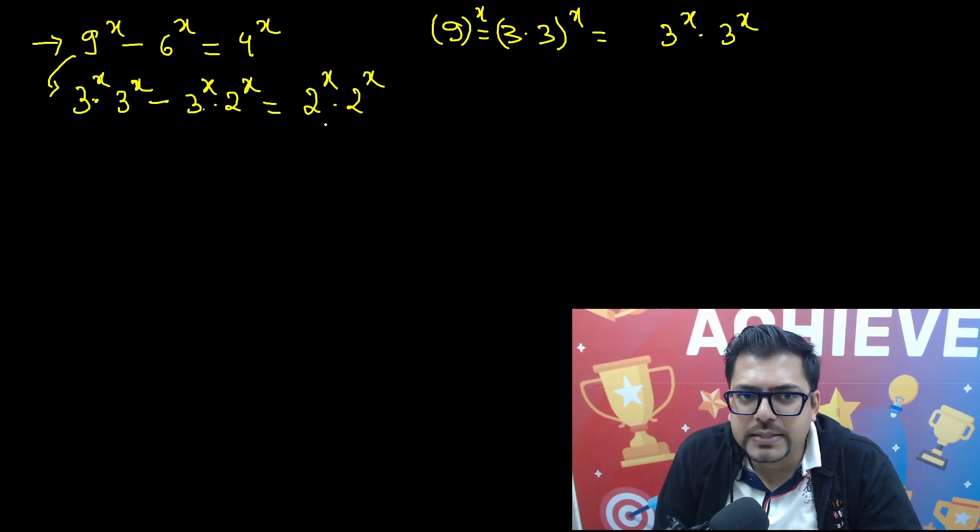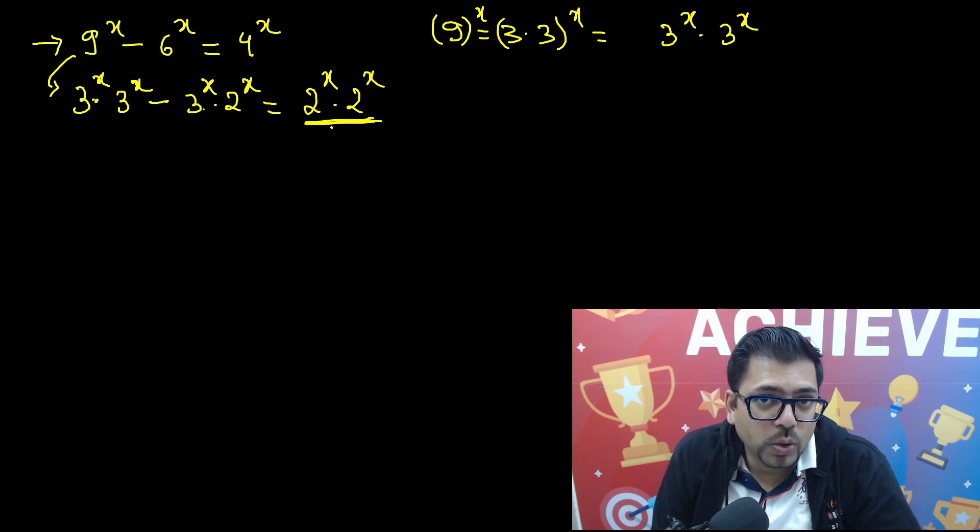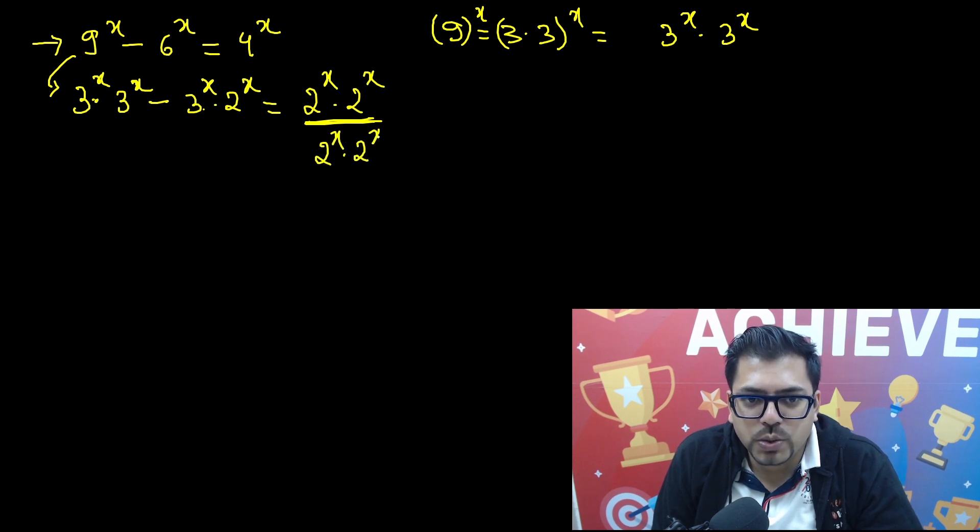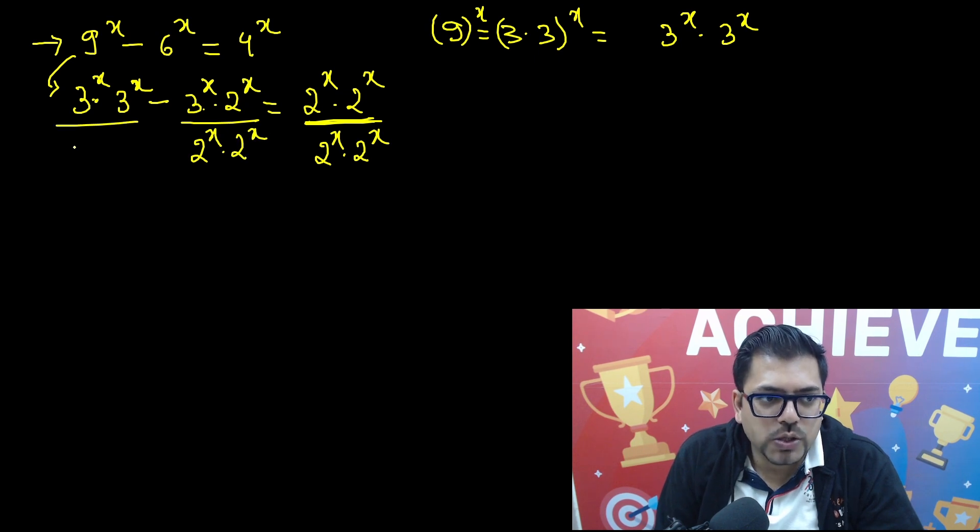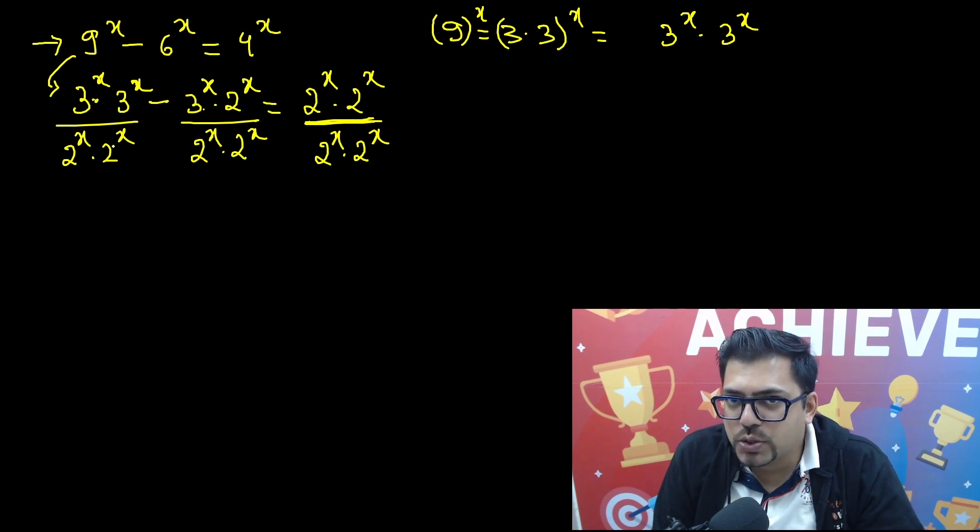So from this I am getting an idea that what if I divide both sides by this right-hand side quantity. I'll tell you what goodness it is going to bring. So if I divide this side by 2 raised to power x times 2 raised to power x, here also, here also, the goodness it is going to give me is...